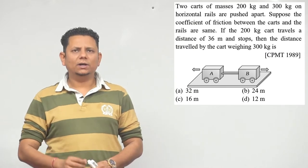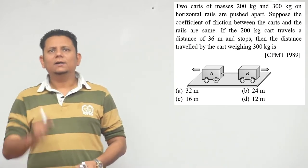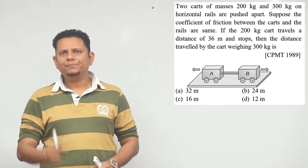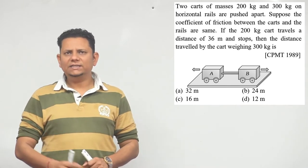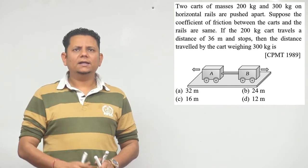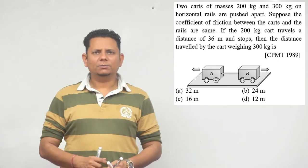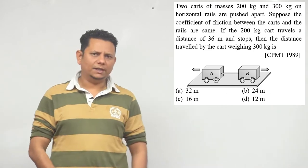Our next question says two carts of masses 200 kg and 300 kg on horizontal rails are pushed apart. Suppose the coefficient of friction between the carts and the rails are same. If the 200 kg cart travels a distance of 36 meter and stops, then the distance traveled by the cart weighing 300 kg will be - the four options are 12 meter, 16 meter, 24 meter, or 32 meter.